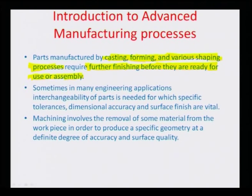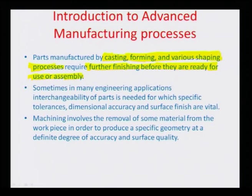These high throughput processes require fine processing so that tolerances dictated by engineering assemblies can be realized. This is one of the reasons why advanced manufacturing processes were initially developed — so that tolerances up to the size of microns, or even nanometers, can be provided. Interchangeability of a part in many engineering applications also dictated the need for specific dimensional accuracy and surface finish.